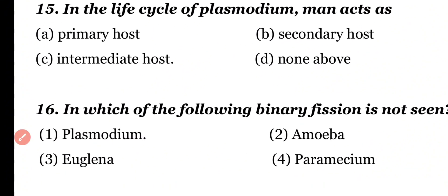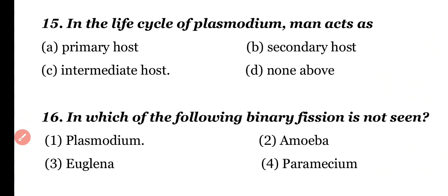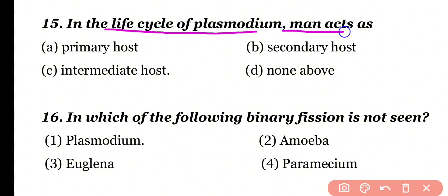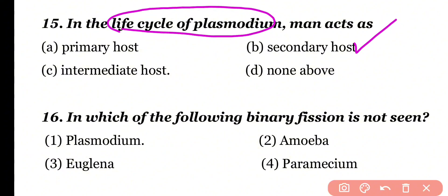Question number 15: In the life cycle of Plasmodium, man acts as — primary host, secondary host, intermediate host, or none of the above? Correct answer is option B. In the life cycle of Plasmodium, man acts as a secondary host, while the female Anopheles mosquito acts as the primary host.